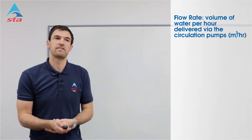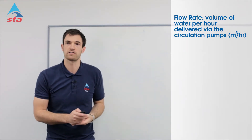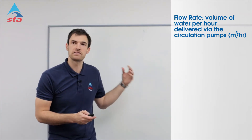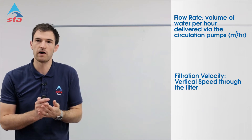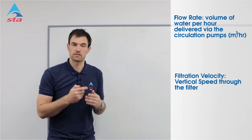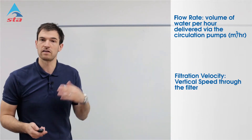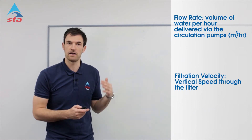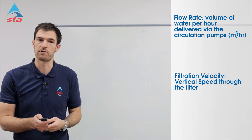Your flow rate is your volume of water per hour delivered via your circulation pumps. That's a measurement of volume, so that's going to come in metres cubed per hour. Your filtration velocity is the vertical speed through the filter — that's a speed, a time over a distance, so that's going to be metres per second, which is also equivalent to a cubic metre per square metre per hour. Just bear that in mind as we go through the presentation.